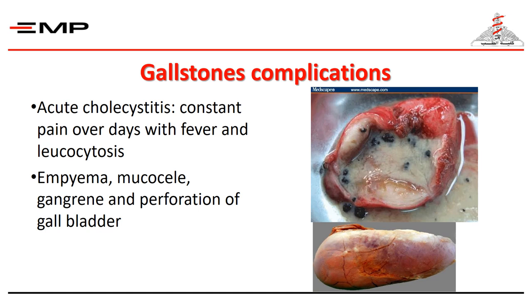Later, the wall may become necrotic and perforate, usually with the development of localized peritonitis, because by that time adhesions have sealed the area from the rest of the peritoneum. Pus trickling along the right paracolic gutter may cause symptoms and signs resembling acute appendicitis. If the impacted stone has caused cystic duct obstruction but with initially minimal inflammation, the bile inside the gallbladder may be absorbed and replaced by mucus secreted from the mucosa, a condition known as mucocele of the gallbladder.